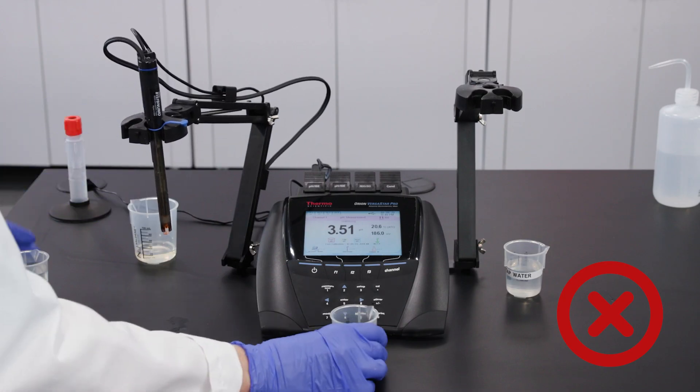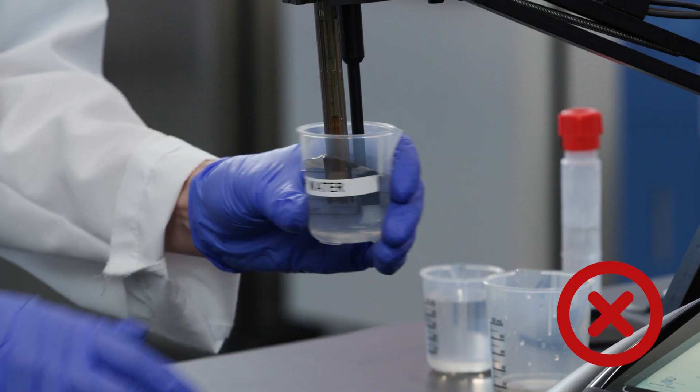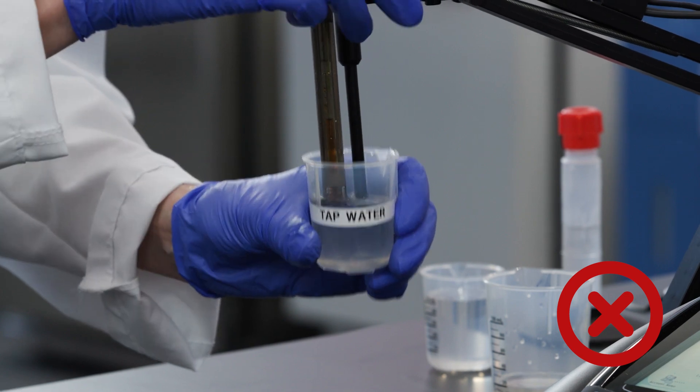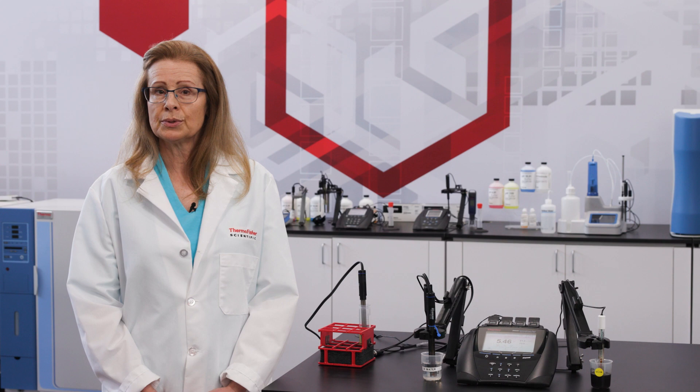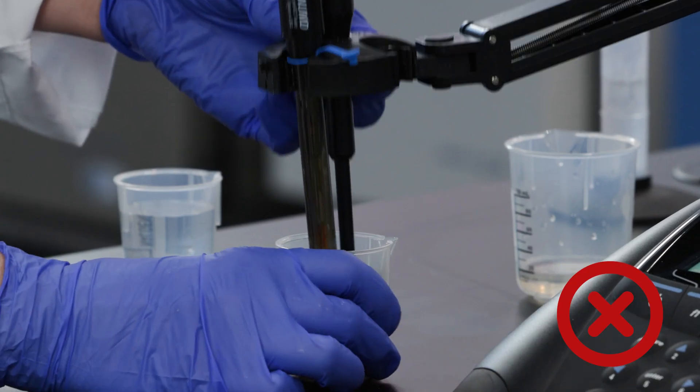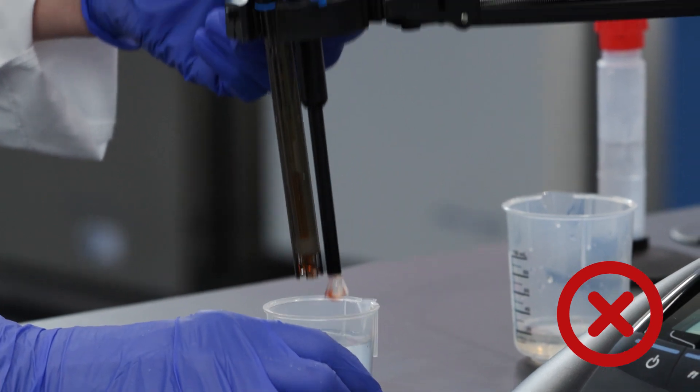Incorrectly rinsing the electrode is another common mistake. Failure to rinse the electrode before moving to a different sample, not using enough water, or using tap water can interfere with the integrity of your analysis. Carryover of the previous sample, including calibration buffers, can cause contamination of the next sample, increase memory effect issues, and slow down the response of our electrode.